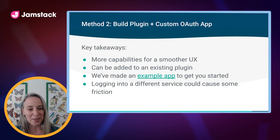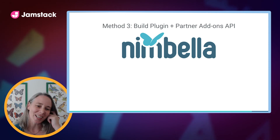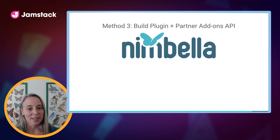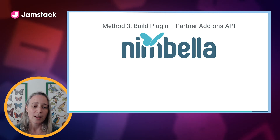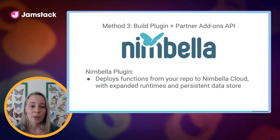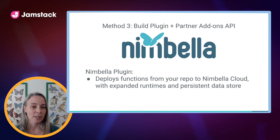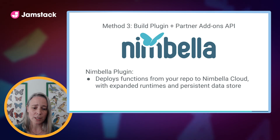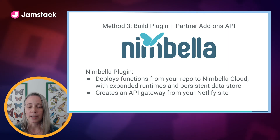So I'm going to talk about the third method, and this is Nubella. The third method is being used by Nubella, which is a build plugin plus partner add-ons API. Nubella is a platform for serverless functions built on top of Apache's OpenWisp technology. Nubella's plugin deploys functions from your repo to Nubella Cloud, which enables you to have expanded runtimes using languages like Python, Java, PHP, Rust, and others. It also provides a persistent data store so you can run stateful transactions with your functions.